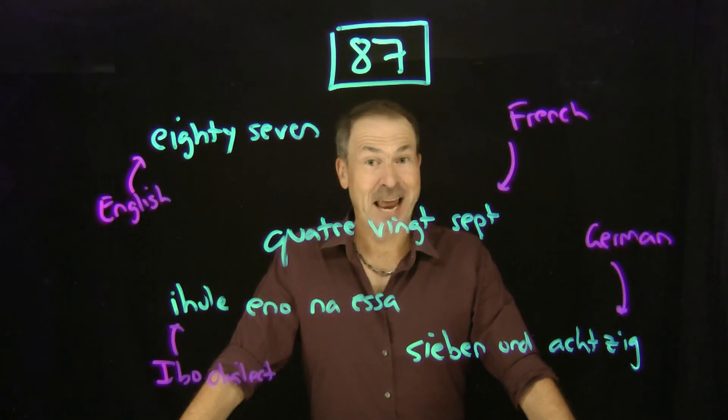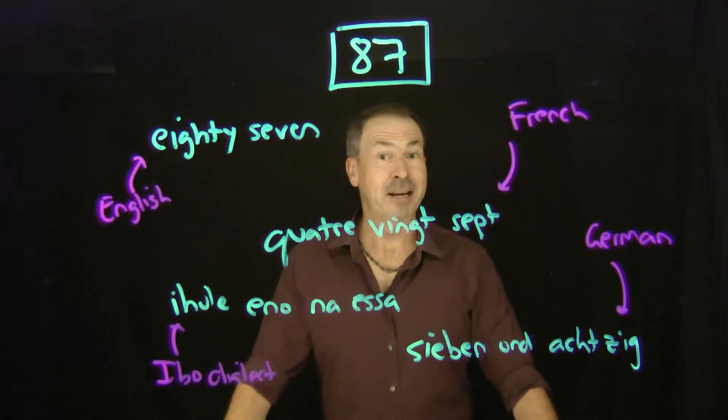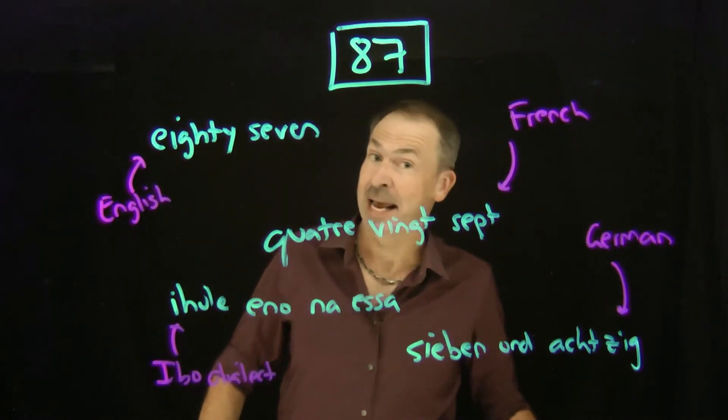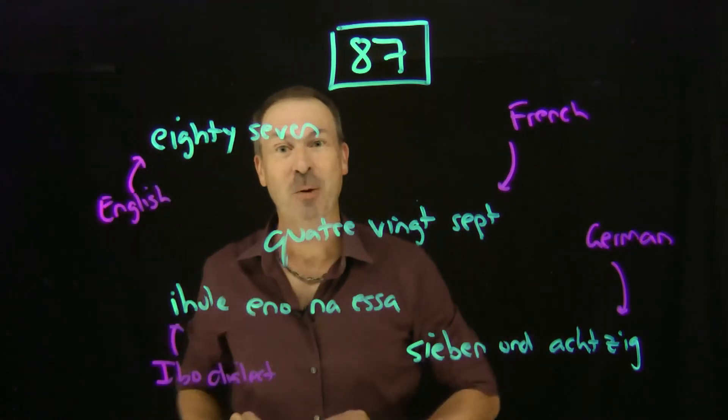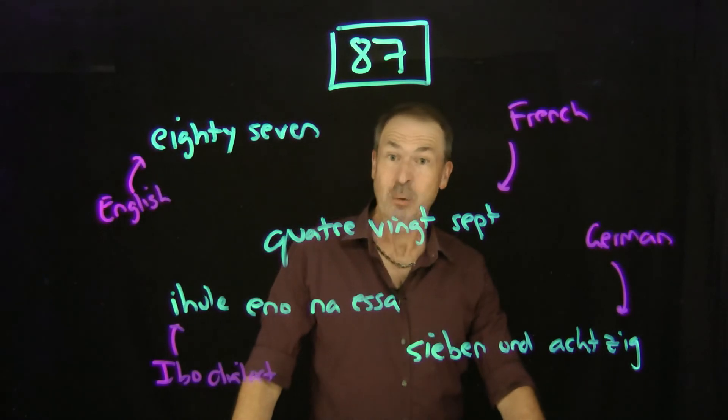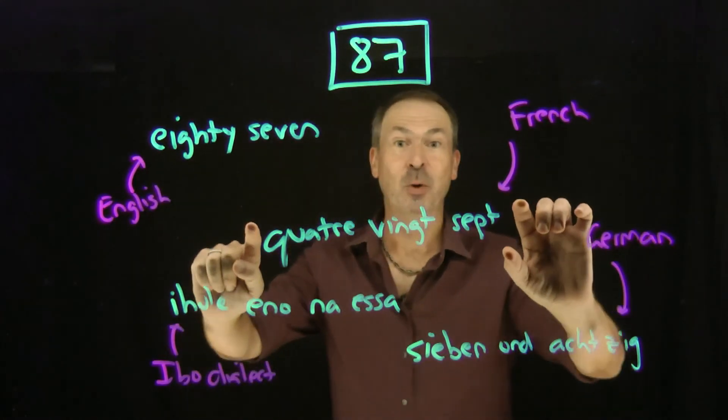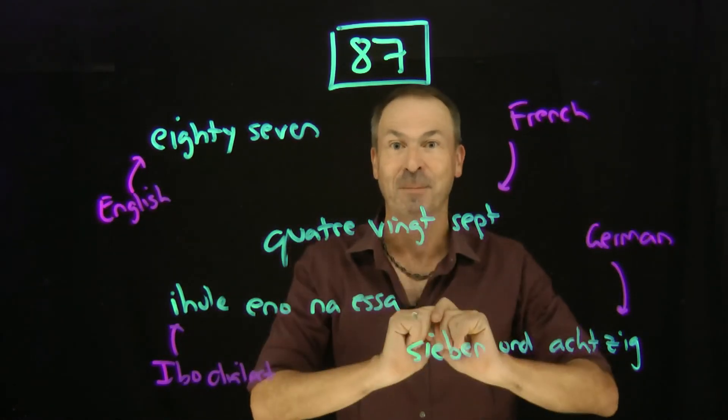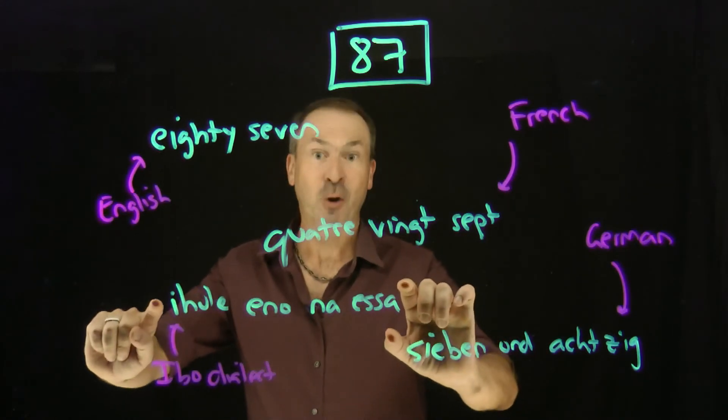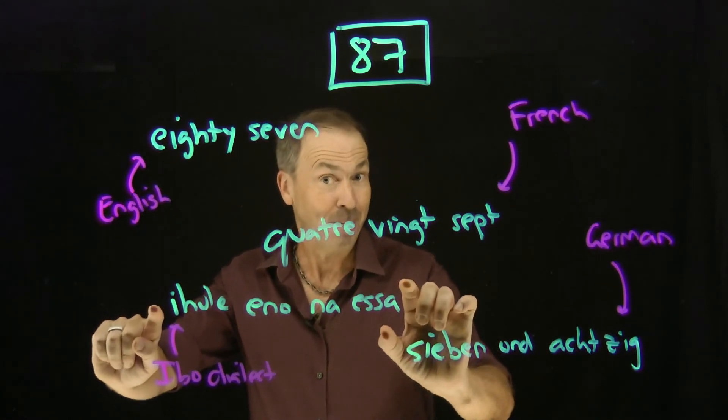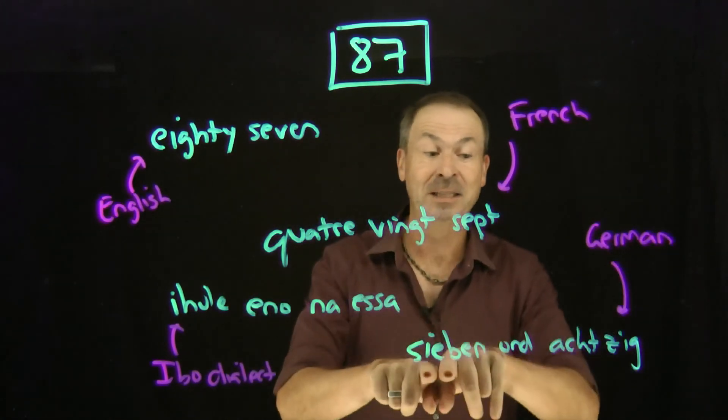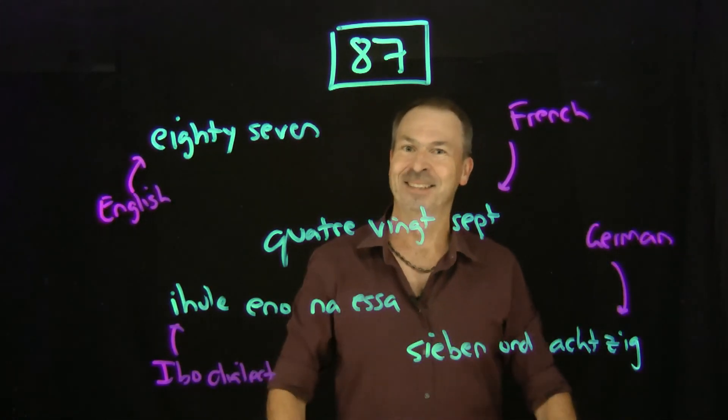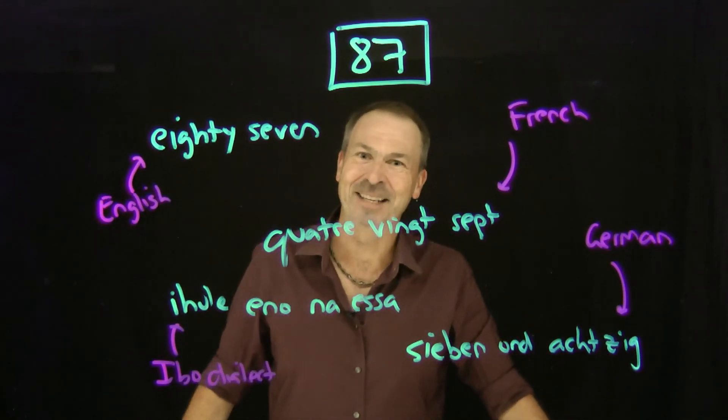Do you speak another language? How do you say 87 in your language? Do you say it in a base 10 sort of way, like we do in English? 87 is literally 8, 10, and 7. Or do you say it in a base 20 way? Quatre vingt sept, like in French. 4, 20, and 7. Or Igbo, this dialect, also says 4, 20, and 7. Or maybe you do base 10, but maybe you change the order around, like German: 7 and 8 tens. I'm curious, how do you say 87?